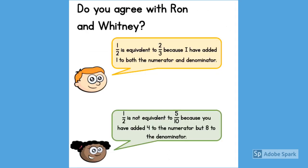Pause the video while you think about this question. Do you agree with Ron and Whitney? Ron says one-half is equivalent to two-thirds because I have added 1 to both the numerator and denominator. Whitney says one-half is not equivalent to five-tenths because you have added 4 to the numerator but 8 to the denominator.